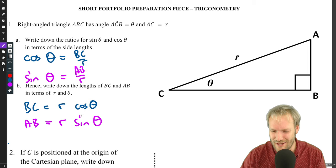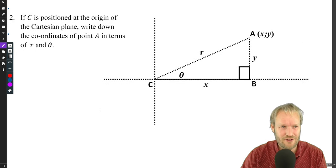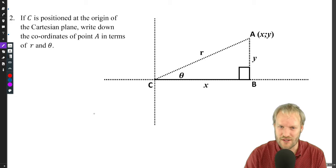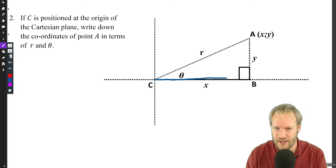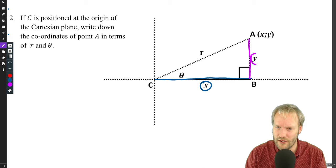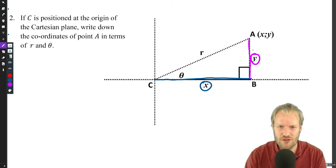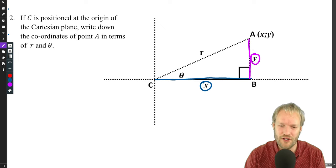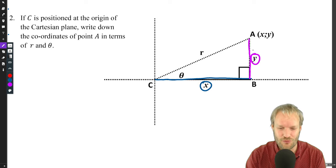Let's use those to do the next few prep points. If C is positioned at the origin, the triangle looks the same, but that length BC we're now calling X and what we call AB we're calling Y. Write down the coordinates of A in terms of R and theta.